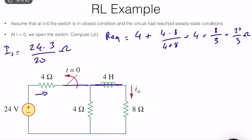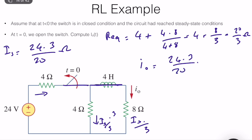These are two parallel branches, so we use the current divider rule. Since the 8 Ω branch is twice the 4 Ω branch, more current flows through the lower-resistance path. I₀ = (24 × 3/20) × (1/3) = 1.2 A. So the initial inductor current I(0) = 1.2 A.